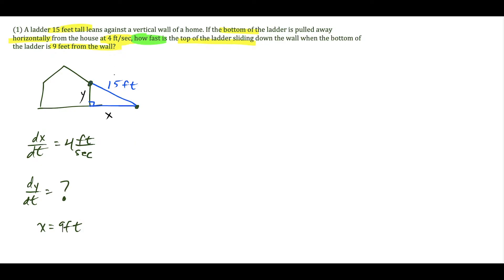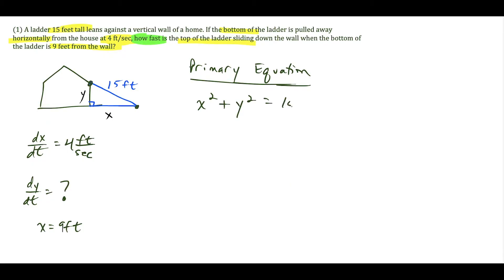The first thing you have to do is come up with the primary equation that models the scenario. The most common mistake is jumping right into X equals 9 feet. Instead, think about the relationship between X, Y, and 15 feet in general. Since they form a right triangle, we set up X squared plus Y squared equals 15 squared, because at any given moment these values must hold true by the Pythagorean theorem. Now we take the derivative of this primary equation with respect to time.